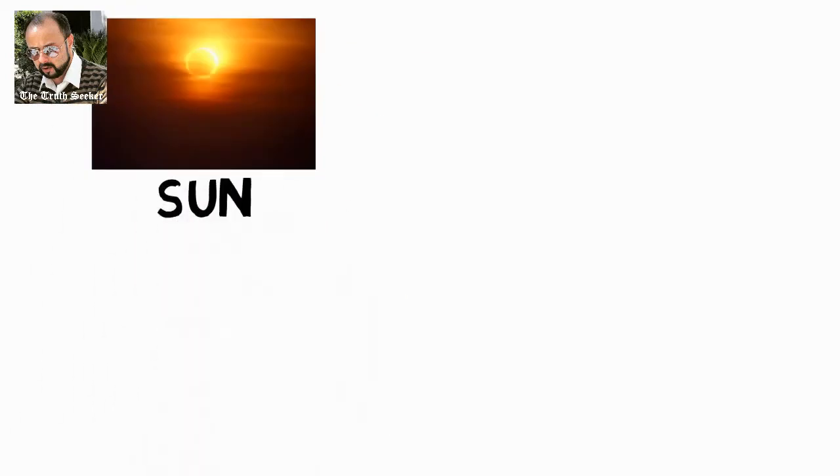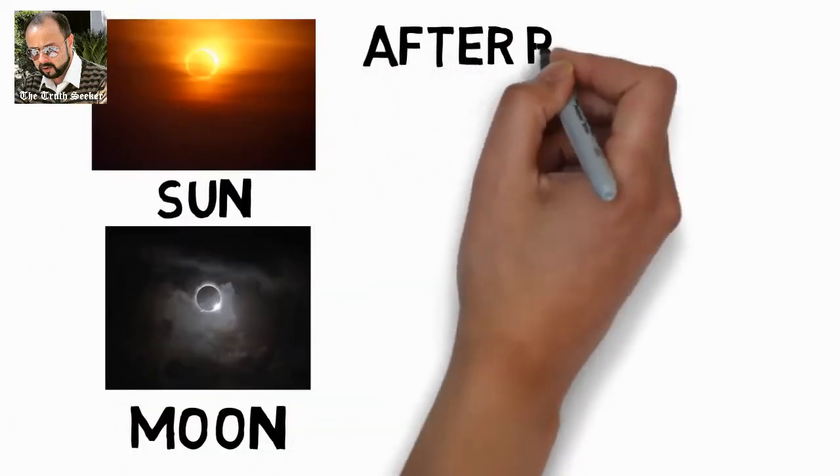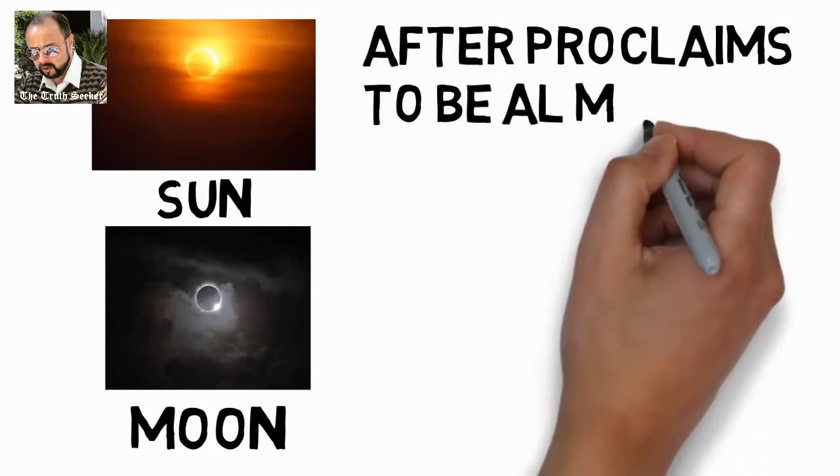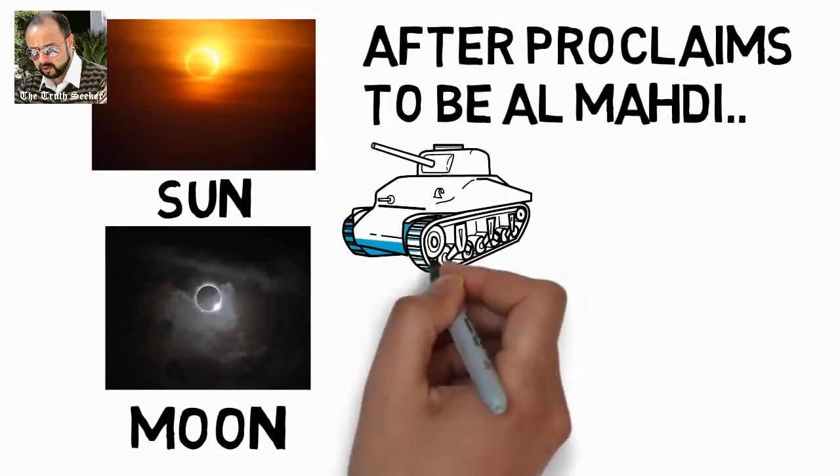There are going to be eclipses of the sun and the moon that month. But after he proclaims himself Al-Mahdi, he's going to be attacked with an army from Sham.